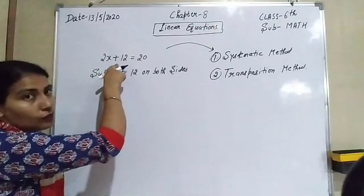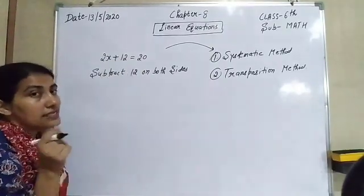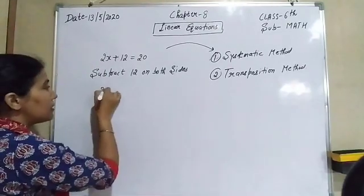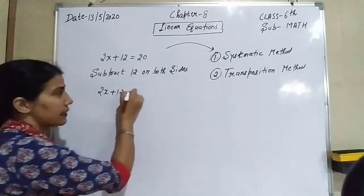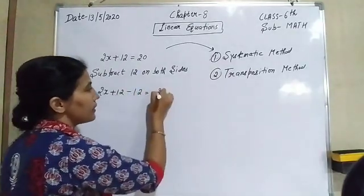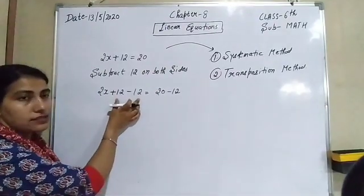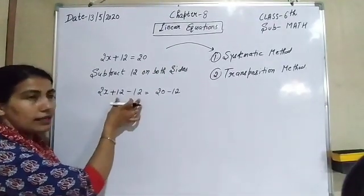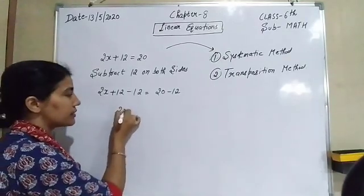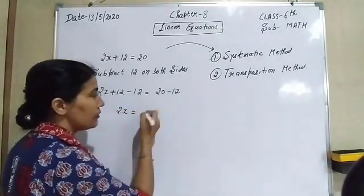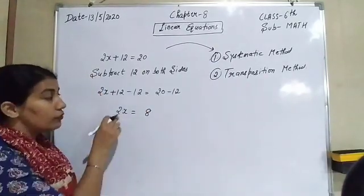After subtracting 12, the positive 12 and negative 12 cancel each other, so we have vanished the constant value. On the left-hand side we now have 2x, and on the right-hand side we have 20 minus 12, which equals 8.